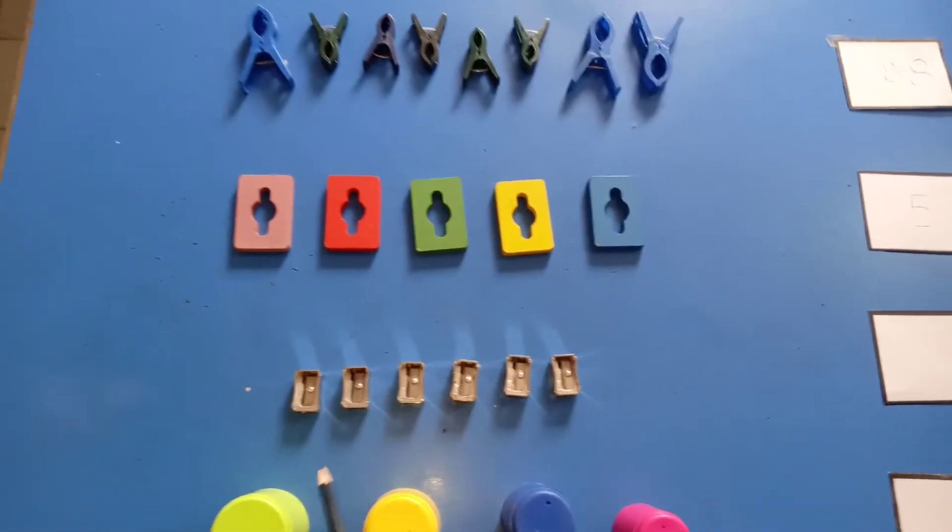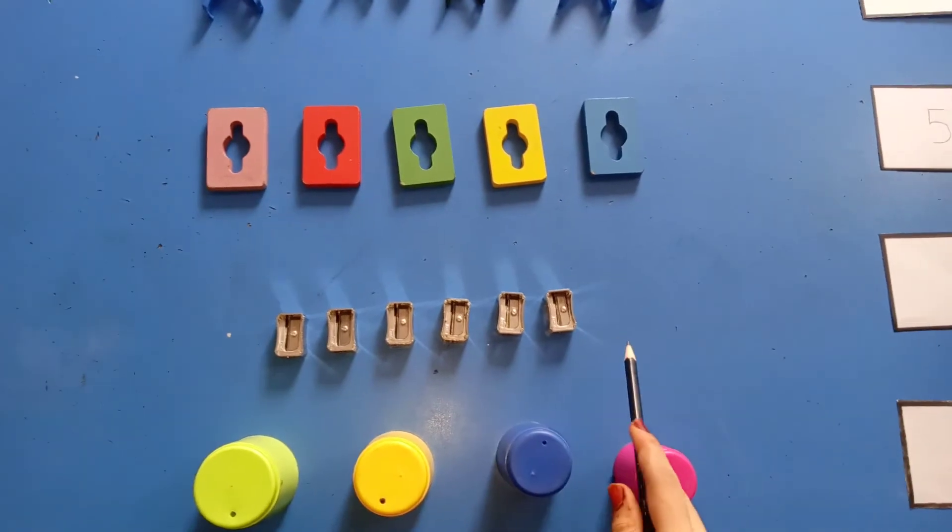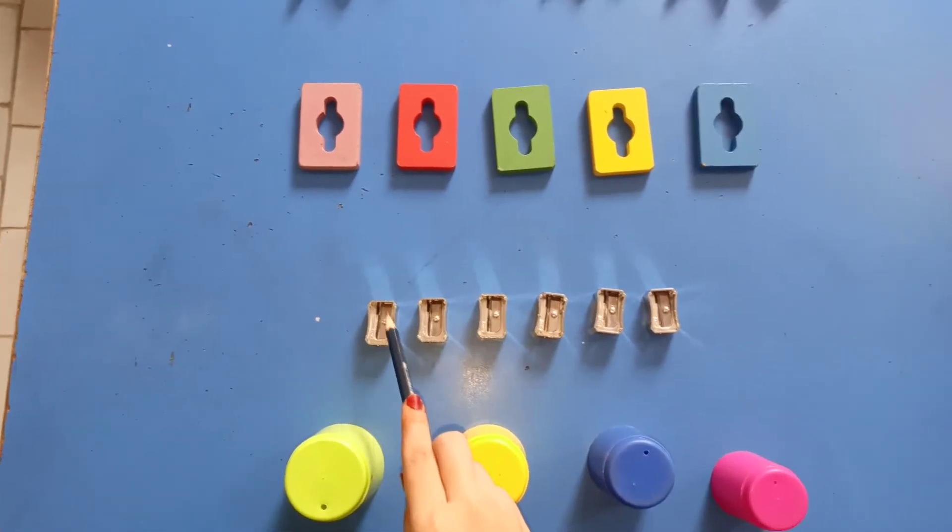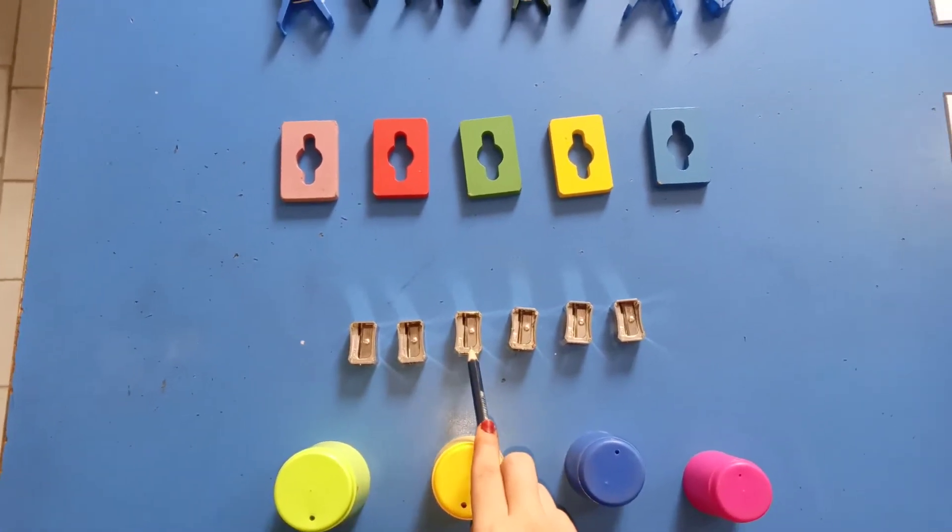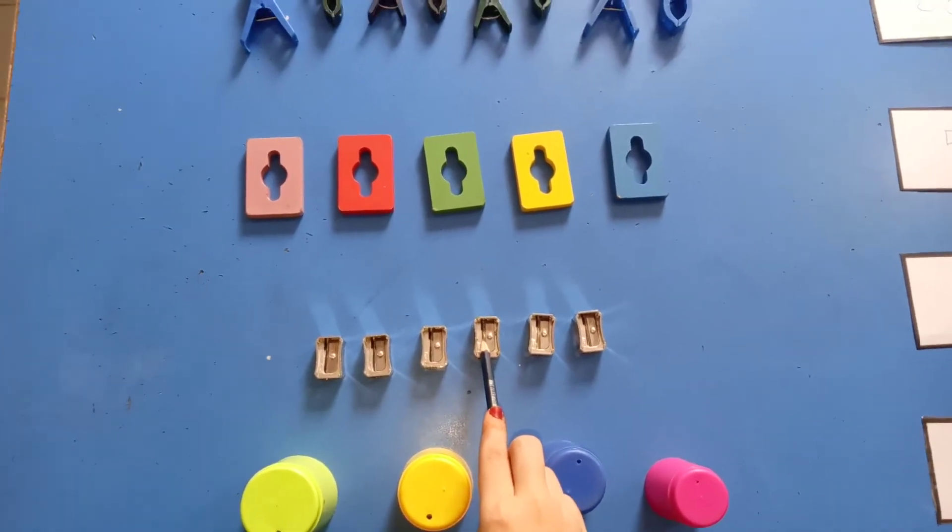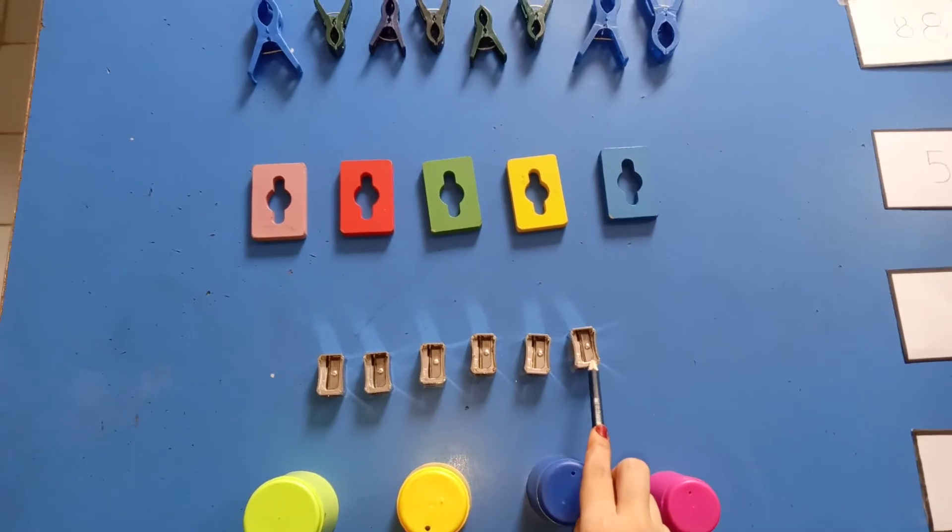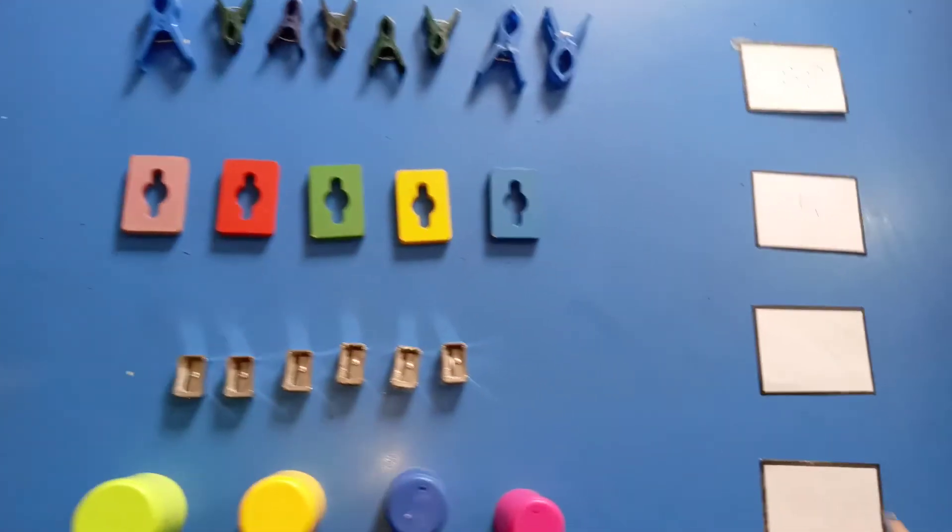Now, what are these? These are sharpeners. Count with me. One, two, three, four, five and six. These are six sharpeners. So, we write here.